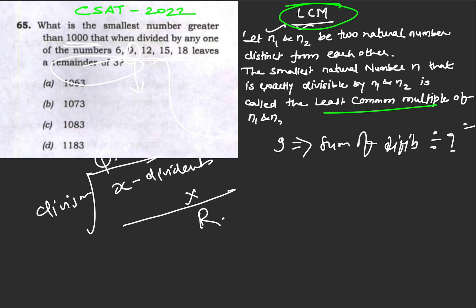What is happening is: the smallest number, suppose x, when divided by 6, 9, 12, 15, 18, gives a remainder of 3.